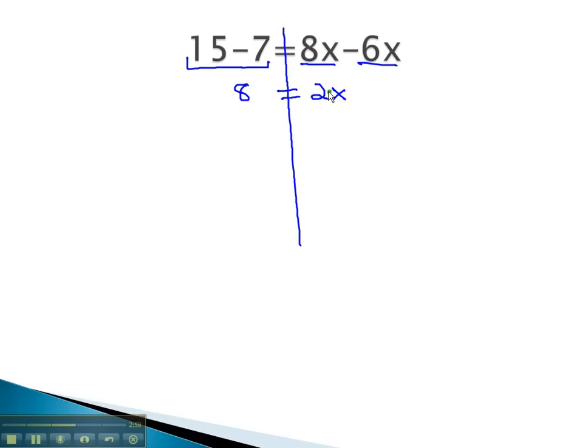Now, we see on the right side, the 2 is multiplied by the x. We get rid of that multiplication by dividing both sides by 2. The 2's divide out on the right, leaving just x is equal to 8 divided by 2, which is 4.